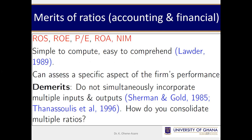Of course, ratios have advantages — they are simple to compute and understand. They can also assess a specific aspect of a firm; for example, if you want to assess the equity section, you can focus on just that part. But another key disadvantage is that ratios don't incorporate multiple inputs and multiple outputs. A typical bank has numerous inputs: deposits, financial capital, physical capital. With multiple inputs, how do you consolidate multiple ratios? You can't combine them because they are different.